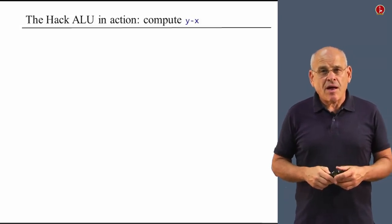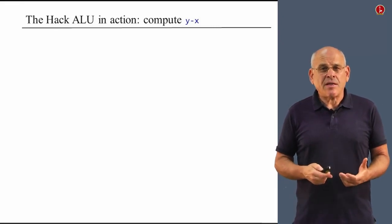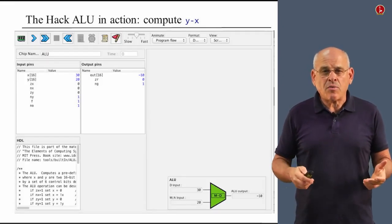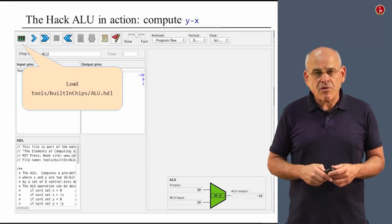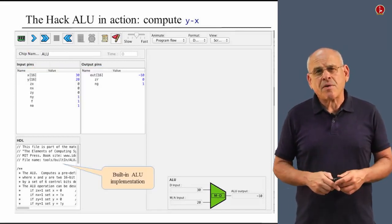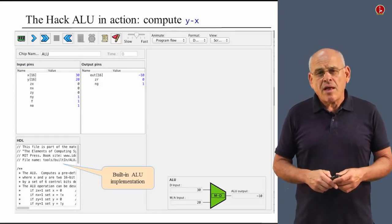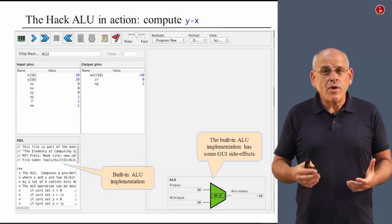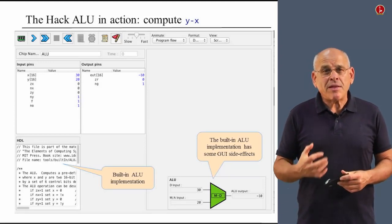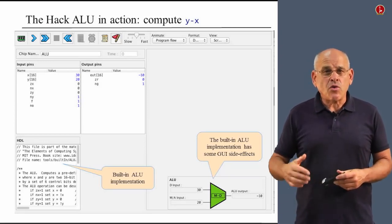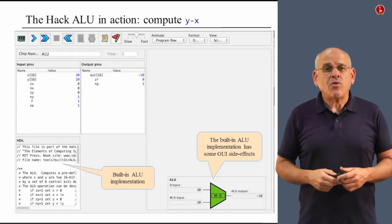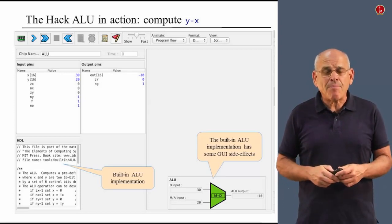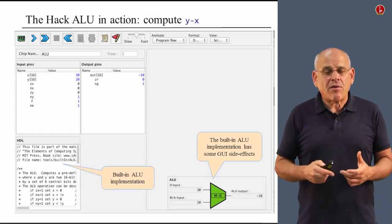Let me illustrate how the ALU works in action. In order to do it, I'm going to use our hardware simulator. So we can fire up the simulator, we can load the built-in ALU chip. And as a result, we'll get this chip into the HDL window. And once we do that, notice that we also get some nice GUI. Indeed, some of the built-in chips in our simulator have a GUI side effect that helps the user to understand what goes on inside the respective chip.